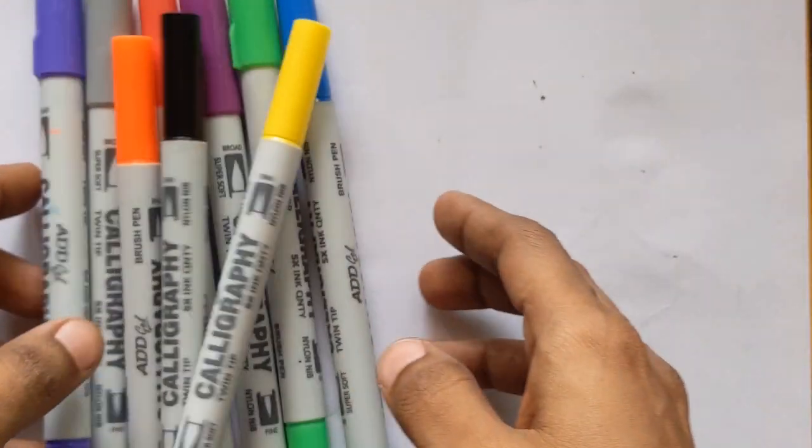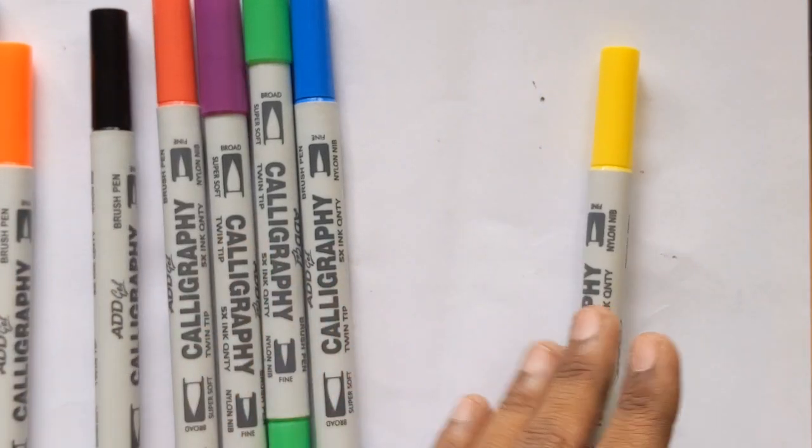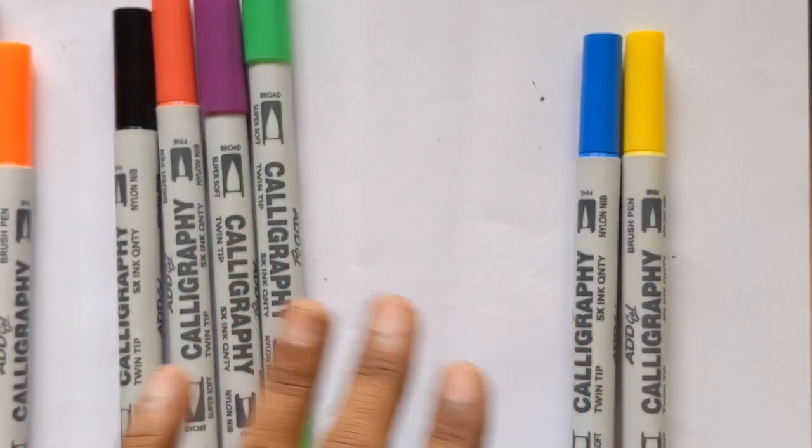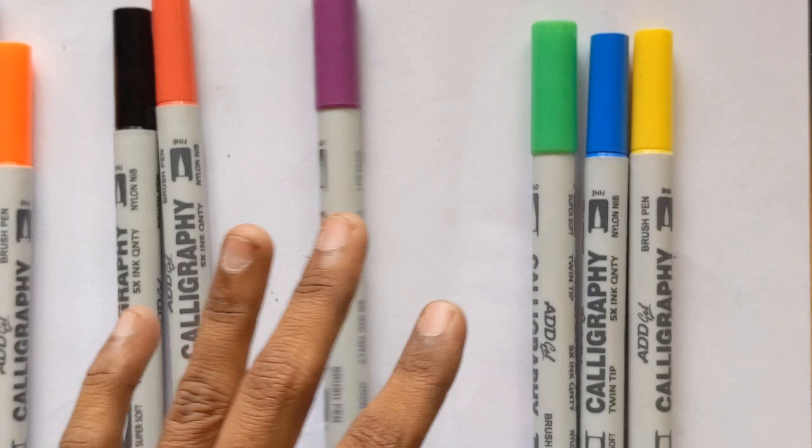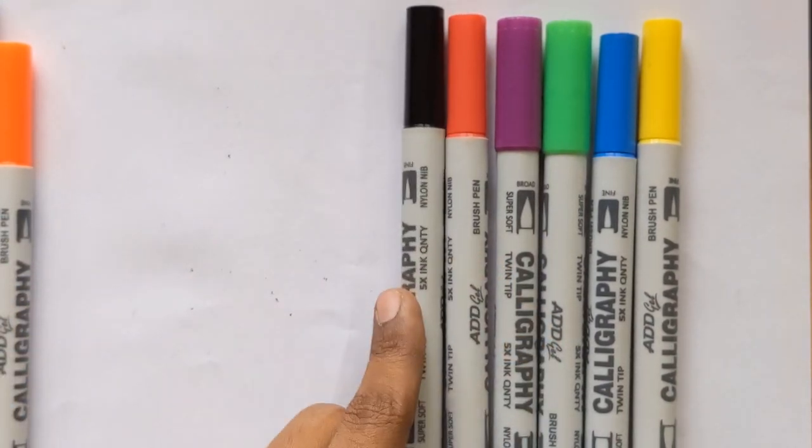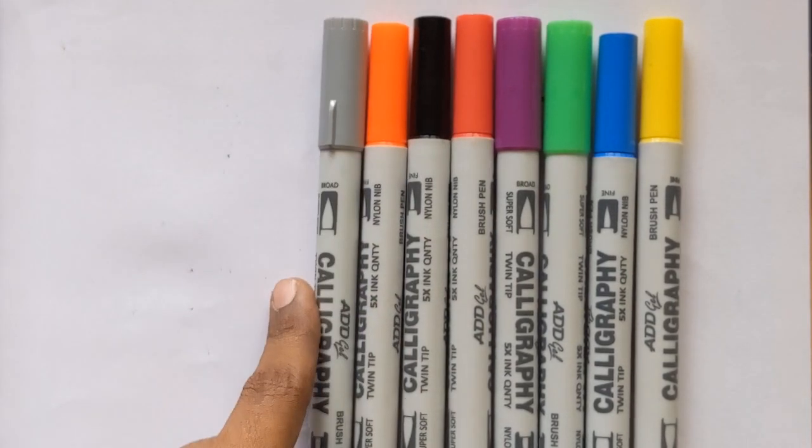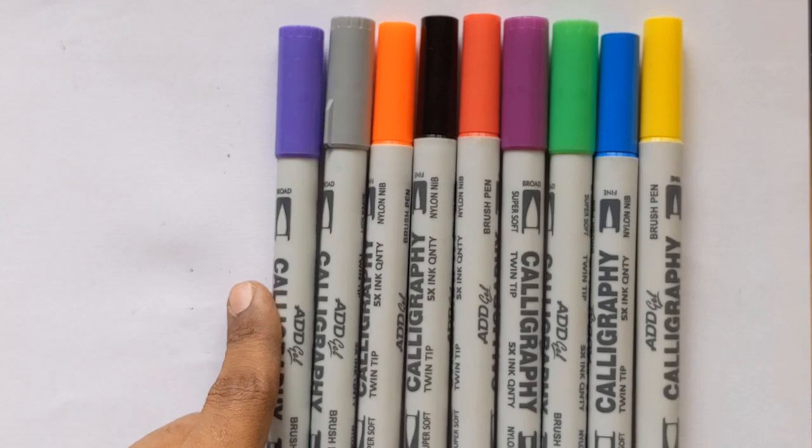Hello everyone, welcome back to Learn with Oviya. Learn some color names. Yellow color, scarlet blue color, light green color, purple color, red color, black color, orange color, gray color, and violet color.